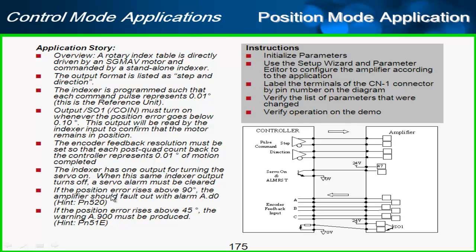And the last two here says if the position error rises above 90 degrees, if we get 90 degrees behind in the amplifier, we want to have the amplifier fault out, position error overflow. And also we would like to have a warning when we get halfway there, 45 degrees.